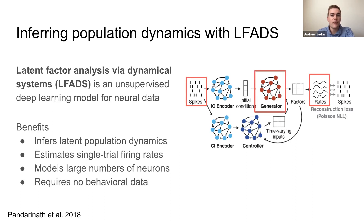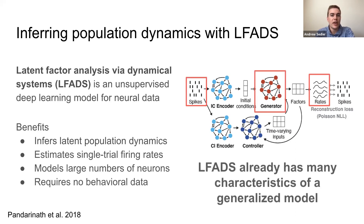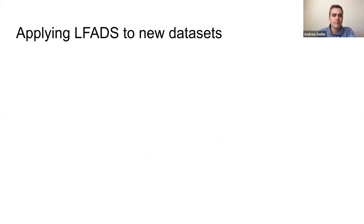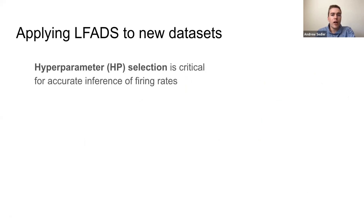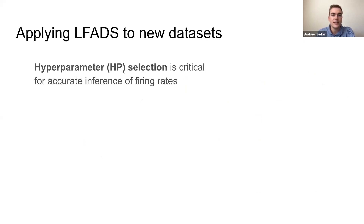As you might have noticed, LFADS already has many characteristics of a generalized neural dynamics model. So what's missing? The problem is that in its original form, LFADS is not easily generalized across datasets. Like most deep learning models, LFADS has many regularization hyperparameters whose optimal values are impossible to know a priori and may be drastically different for different datasets.